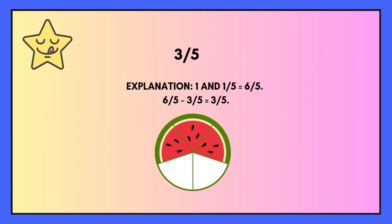The answer is 3 fifths. The explanation is 1 and 1 fifth is the same as 6 fifths. So all we need to do is 6 minus 3, which gives us 3, and that's our numerator. And we keep the same denominator. So the answer is 3 fifths.